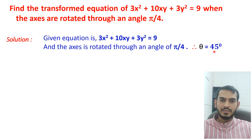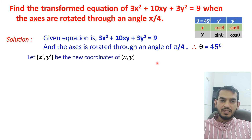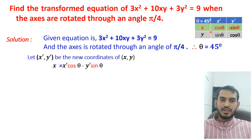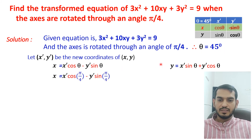π/4 can be written as 45 degrees because π is 180 degrees. Let x', y' be the new coordinates of x, y. From the rotation formulas, x = x'cosθ − y'sinθ and y = x'sinθ + y'cosθ. Since θ = 45 degrees, we replace θ with π/4 or 45 degrees.